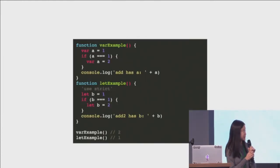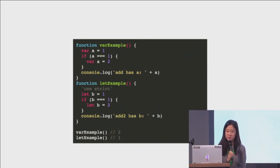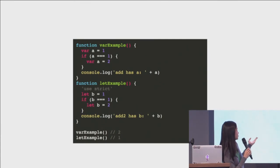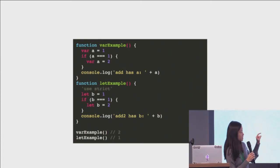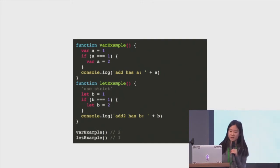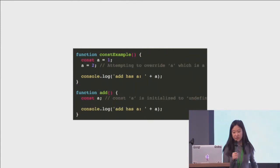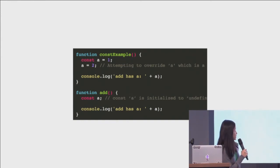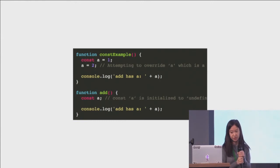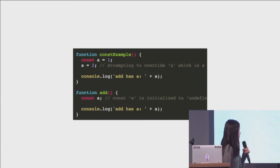Let is very similar to var, but let variables are block-scoped. So if you have b equals one inside an if block and reassign b to two, the outside b is not being changed. Const variables cannot be changed, which means you also have to initialize them when you declare the variable. So if you declare a as one and then try to change a to two, that causes warnings or errors — and if you don't give any value to a, that's also a problem.